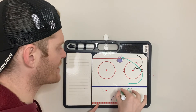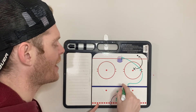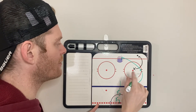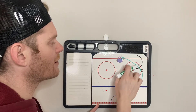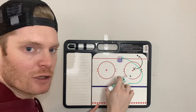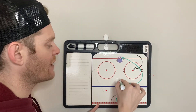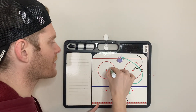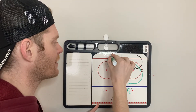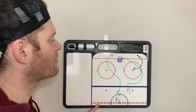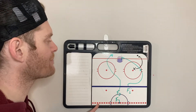As this is happening, F2 needs to come through the middle, read where the puck is moving and where F1 is going. Then F2 is going to come in and try to sandwich them behind the net.